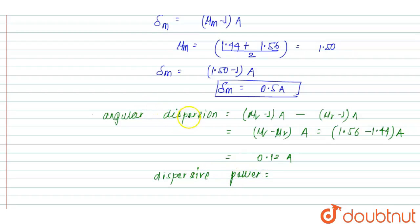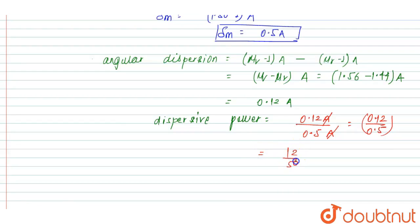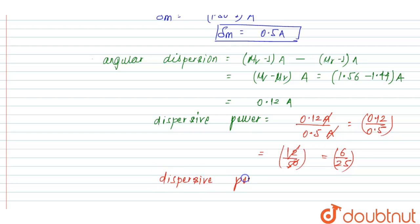Dispersive power is the ratio of angular dispersion upon mean deviation, which is 0.12A / 0.5A. The A cancels out, giving 0.12 / 0.5 = 12/50 = 6/25. So the dispersive power equals 6/25, which is the right answer.